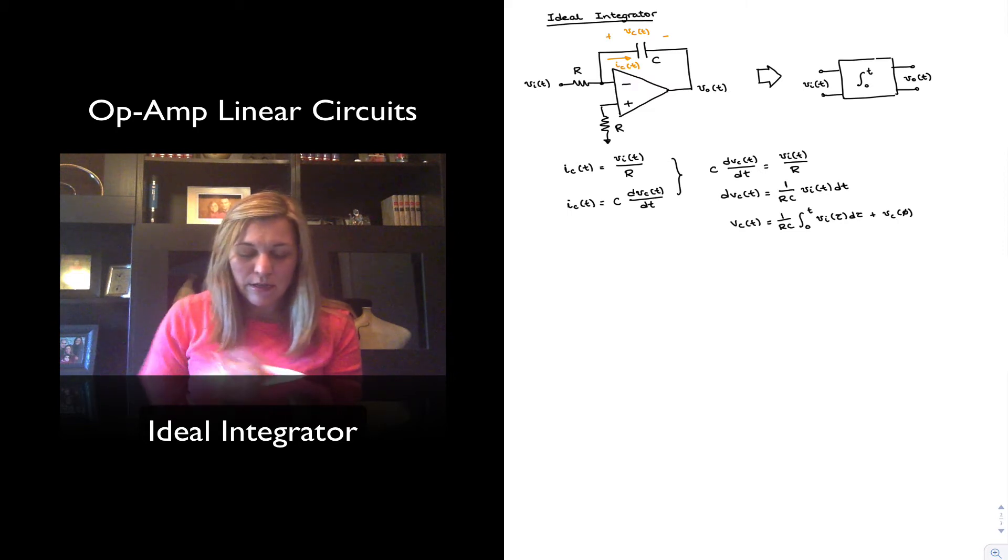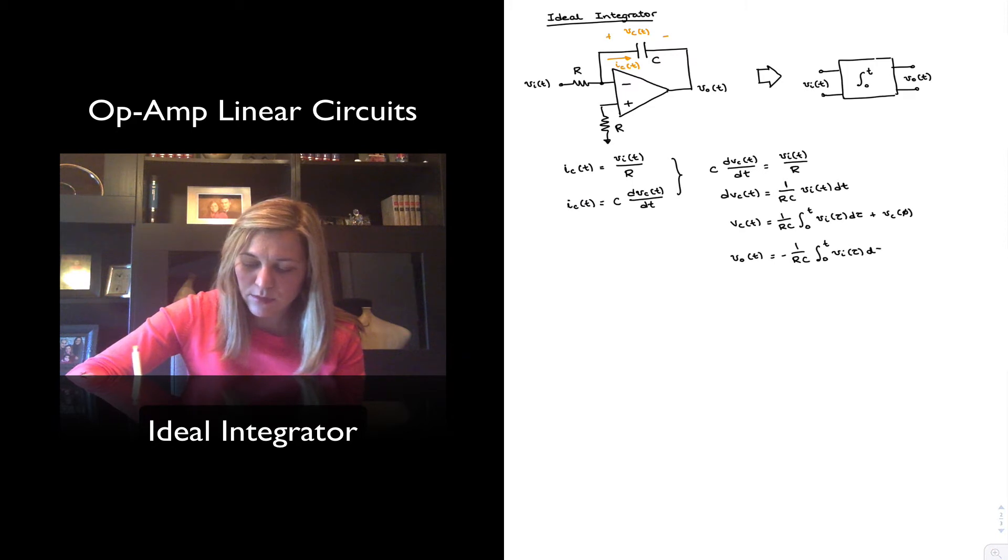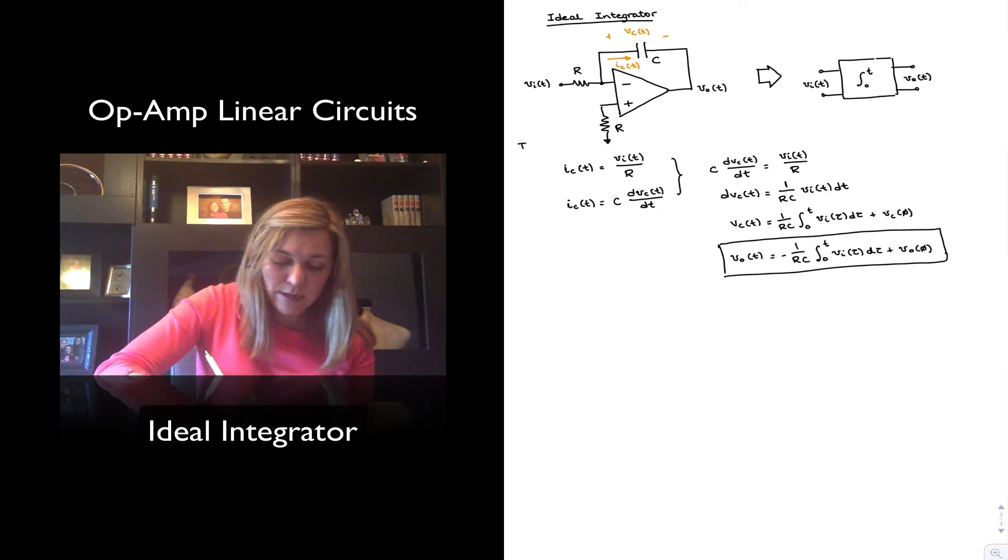Now if we look at the circuit, we can notice that the output voltage Vout is exactly equal to negative the value of Vc, since again the negative input terminal of the op-amp is sitting at virtual ground. And so I can express then my output voltage, as a function of time, as the inverse minus 1 over RC times the integral from zero to t of Vi of tau d tau plus the initial voltage Vout at time zero. And so this will be the equation for the ideal integrator. This will be the time domain analysis.